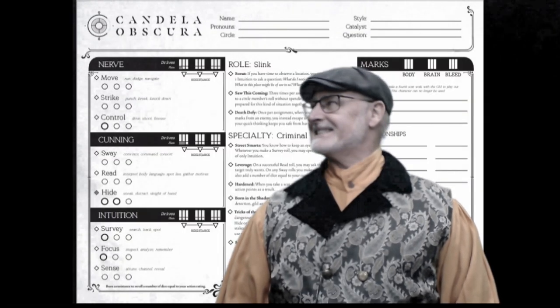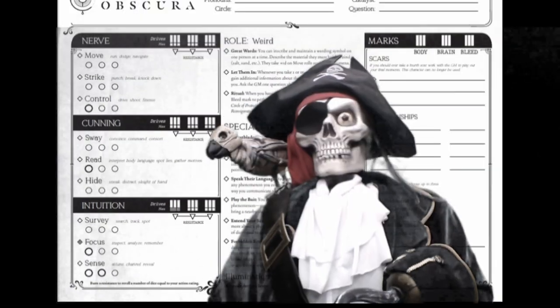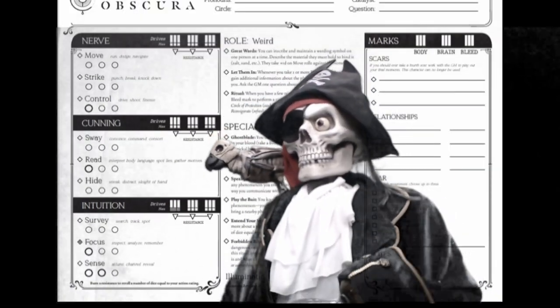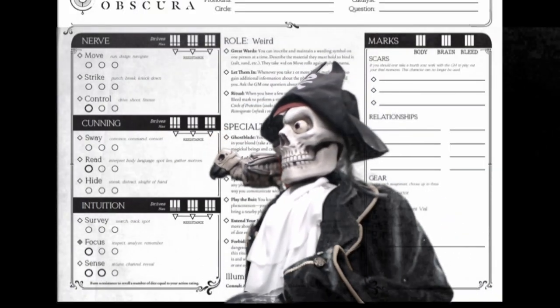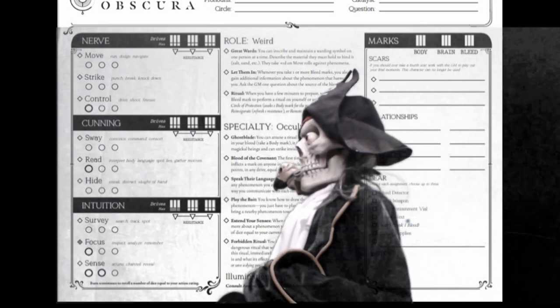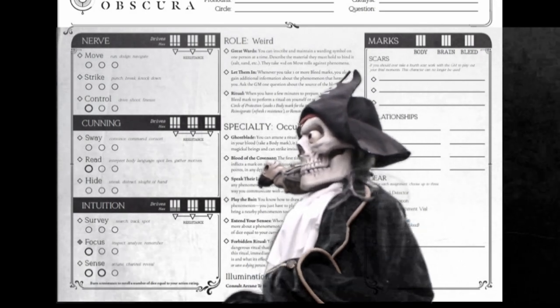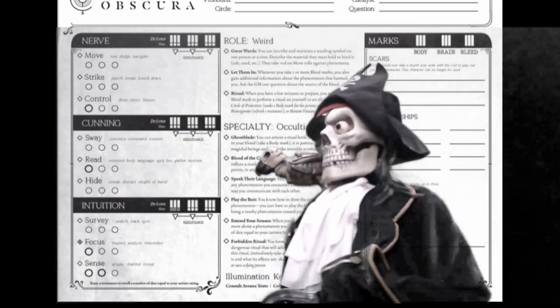The drive nerve has the actions move, strike, and control. The drive cunning has the actions sway, read, and hide.